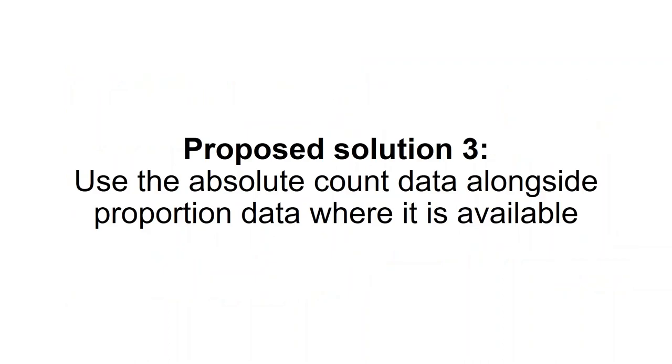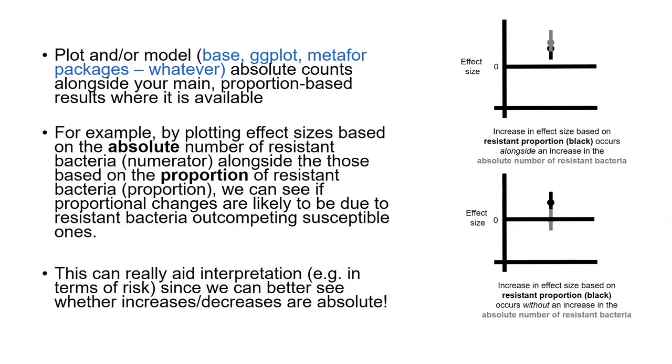And these obviously have very different implications in terms of interpreting what's going on in our data. And I actually think this is a bigger interpretability problem than some of those I mentioned earlier. And the way I propose to deal with it is to use absolute count data where it is available alongside your proportion data on which your main analysis is built. So you have your effect sizes based on your proportion data, which cover all of your studies and you've plotted and modeled those. But I think you should also, alongside those, plot and model the absolute counts where they are available.